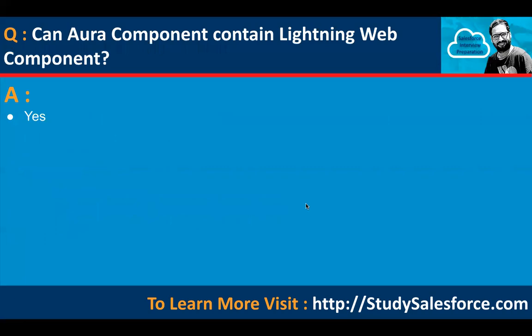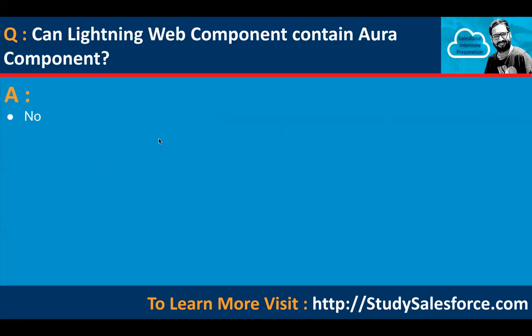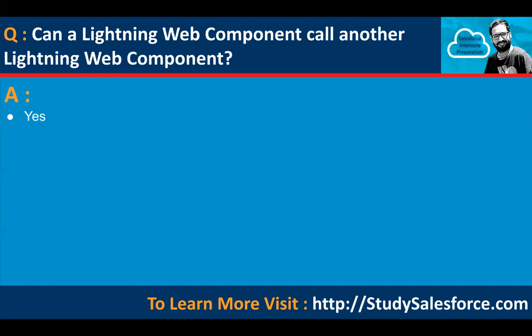Can an Aura Component contain a Lightning Web Component? The answer is yes. Can a Lightning Web Component contain an Aura Component? The answer is no. Can a Lightning Web Component call another Lightning Web Component? The answer is yes — we can have a parent-child relationship while implementing Lightning Web Components.